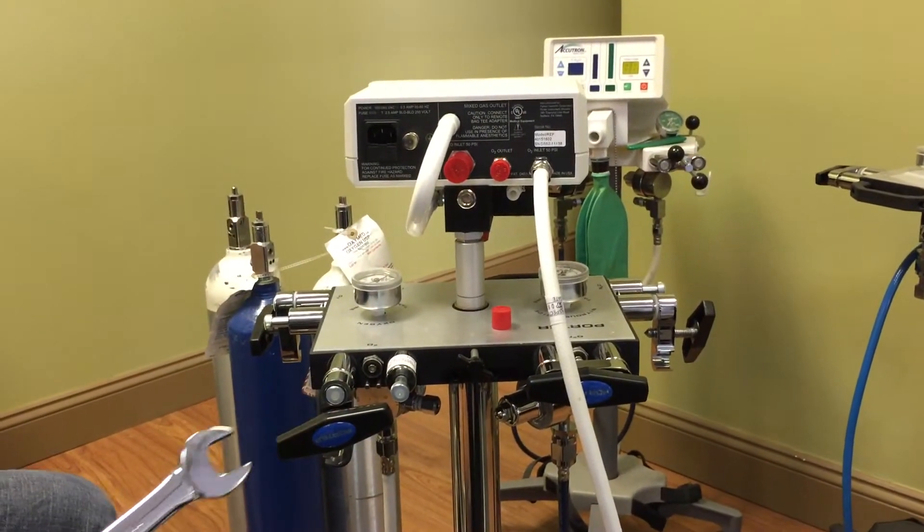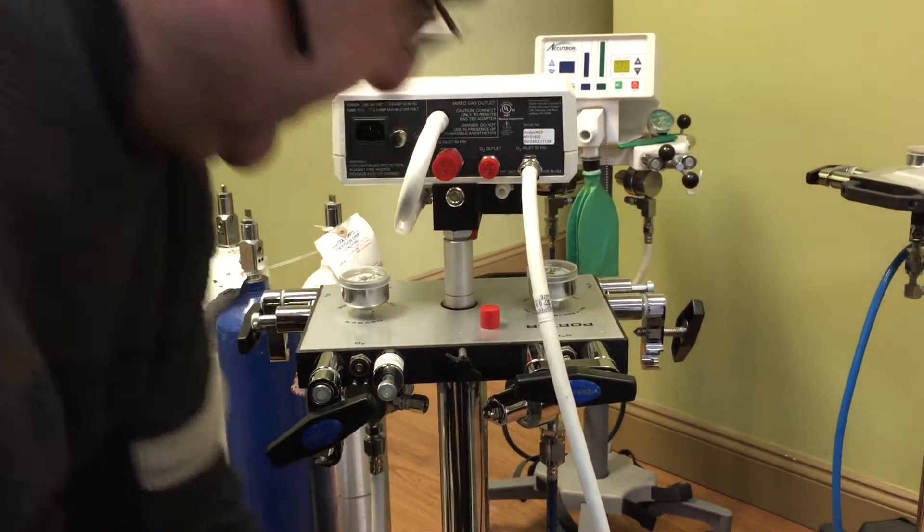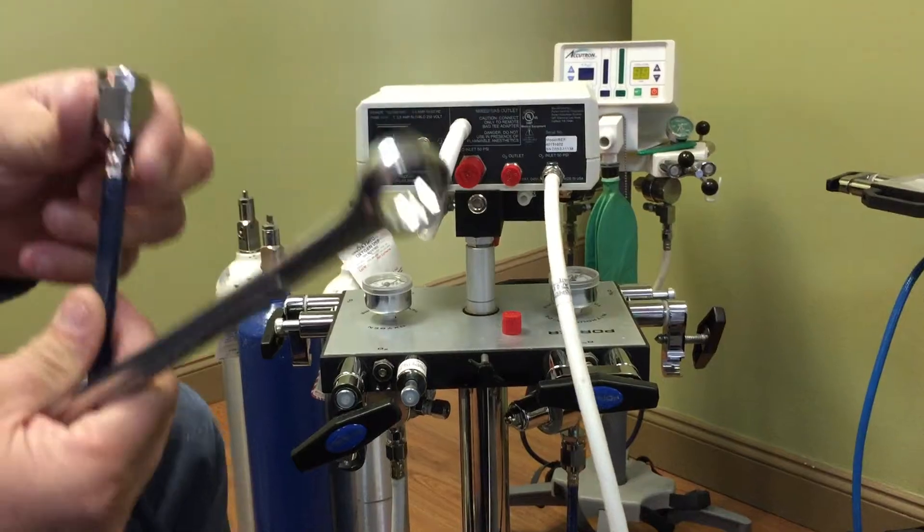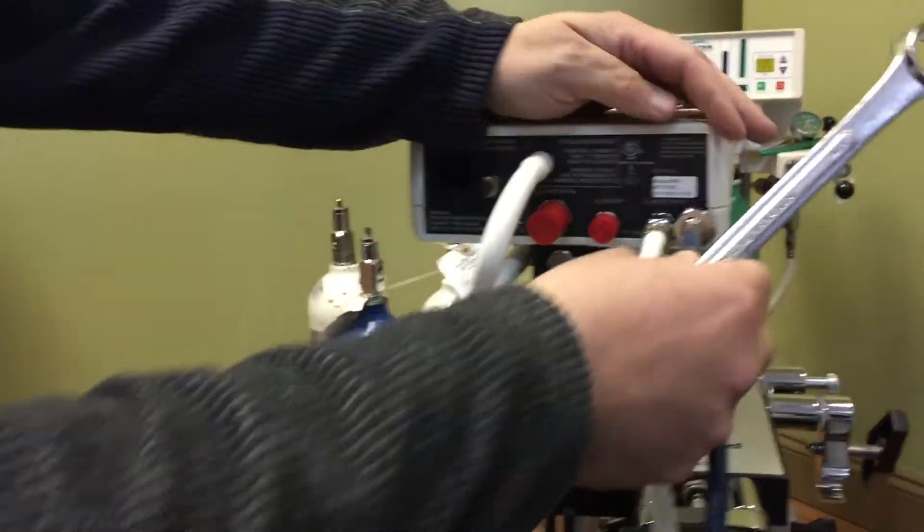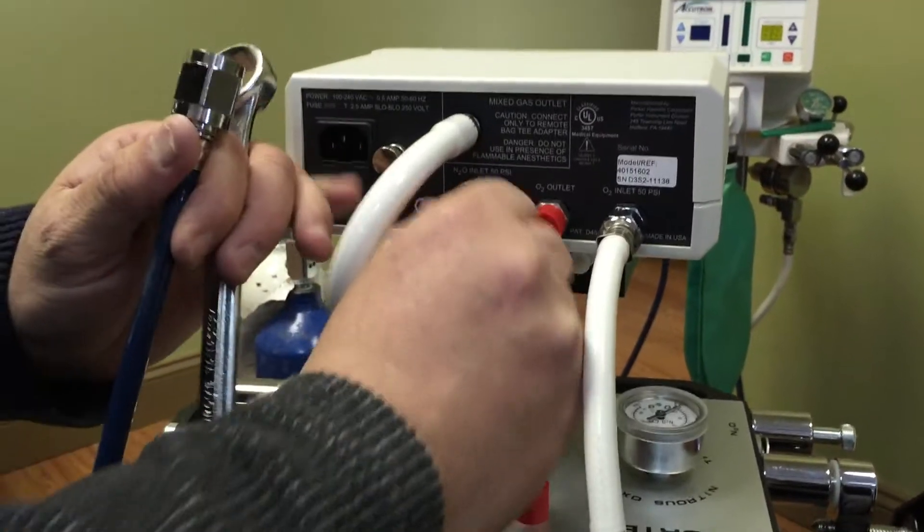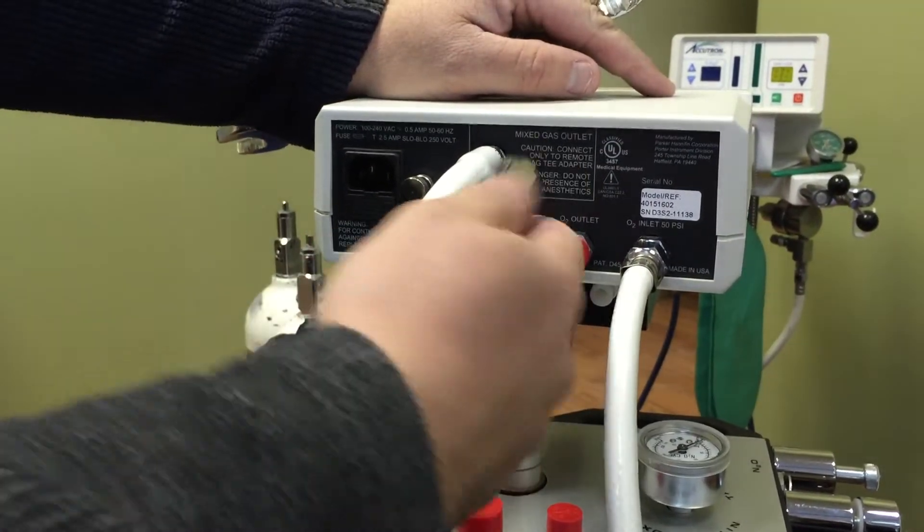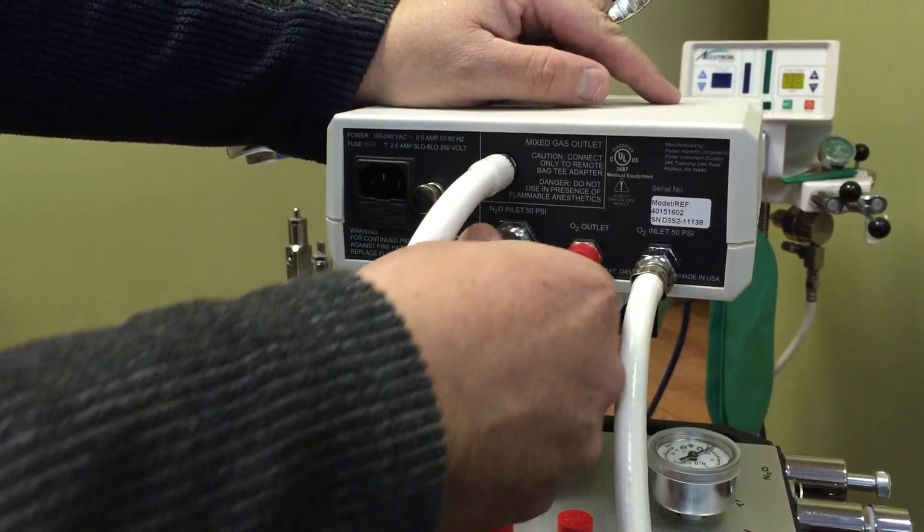Now, once that's done and we know everything is snugged up, we're going to do the nitrous line. The nitrous line, totally different connection, safety reasons. Nothing will connect unless they're made for each other. So nitrous goes on here, nothing to worry about. You can't mix anything up. And this is going to be a nitrous gas that's going in.